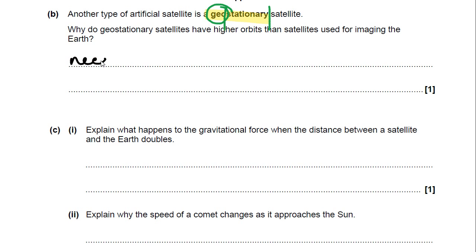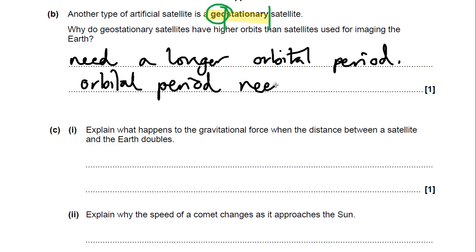They need a longer orbital period. You don't actually need this data for the answer, but it's interesting if you think about it. It's the same point above Earth at all times. Earth takes 24 hours to rotate, so the orbital period needs to be 24 hours. The higher it is up, the longer the orbital period will be.